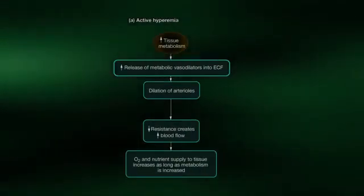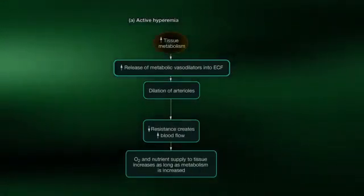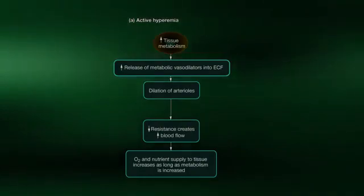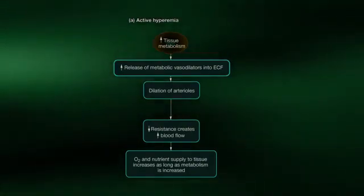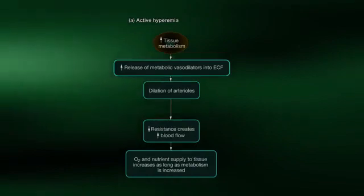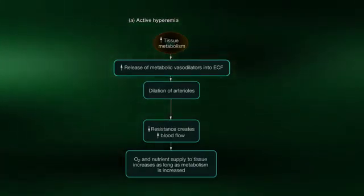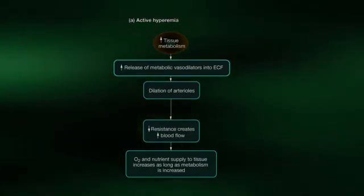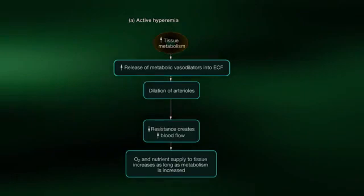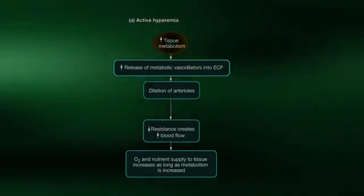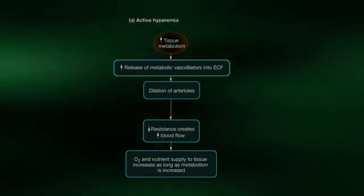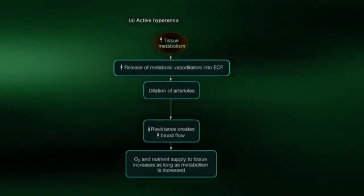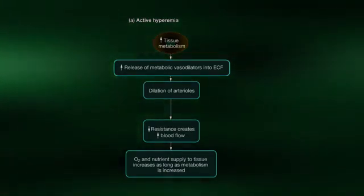Basically, this refers to the fact that when the metabolic rate of skeletal muscle increases, as it does during exercise, the resulting changes in the local environment of the cell reflect greater functional or metabolic needs. Thus, the metabolic byproducts associated with an increase in metabolism can be sensed, resulting in greater blood flow.